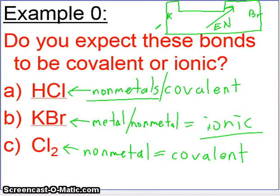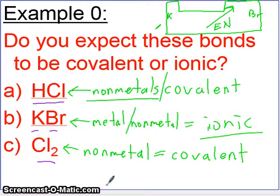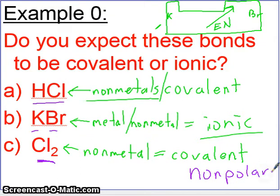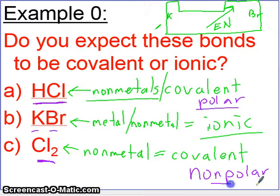It's really as easy as asking: do we have a metal and a nonmetal, or are both nonmetals? To differentiate between polar and nonpolar covalent bonds: Cl2 has the same element on both sides, so both have the same desire for electrons — this will be nonpolar. For HCl, there's a difference in electronegativities between H and Cl, so this will be polar — unequal sharing of electrons.